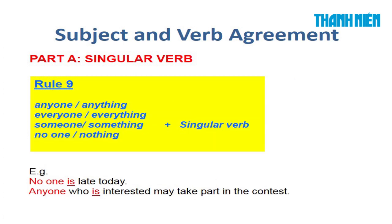Rule number 9: Indefinite pronouns — những đại từ bắt đầu bằng any, every, some và no: anyone, anybody, anything; everyone, everybody, everything; someone, something, somebody; no one, nobody, nothing — tất cả những từ này nếu làm chủ ngữ, động từ chia số ít. Ví dụ: 'No one is late today'; 'Anyone who is interested may take part in the contest.'